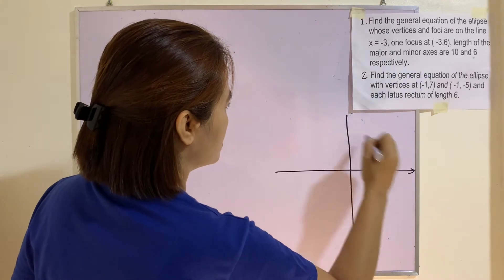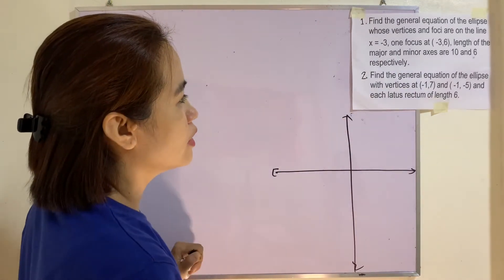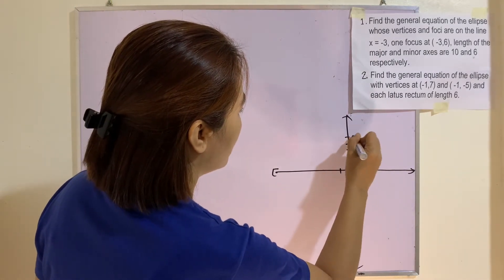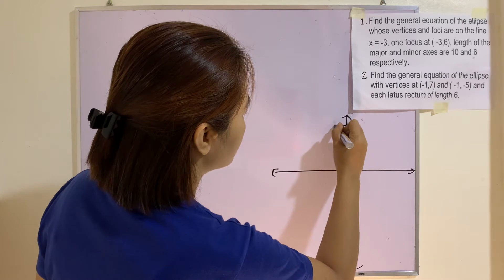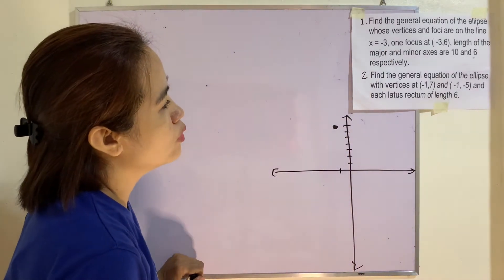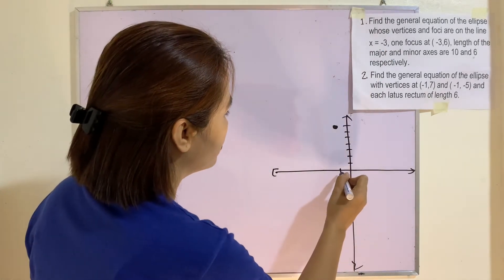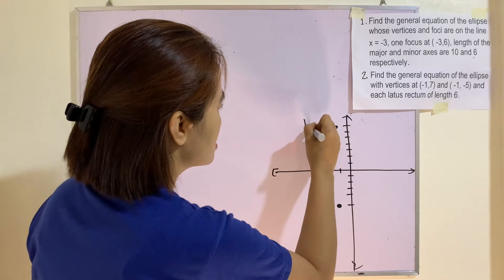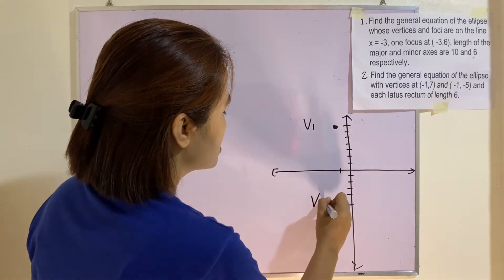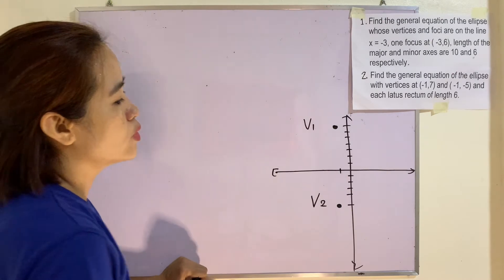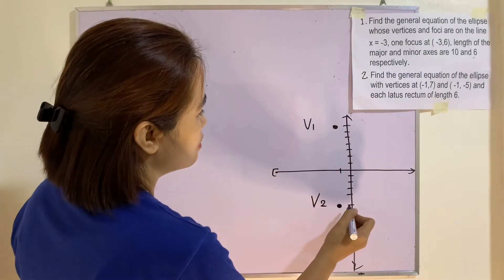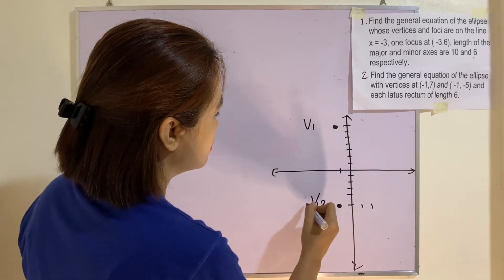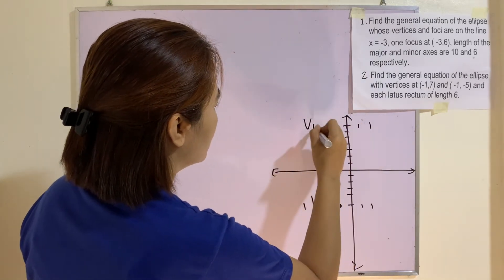Again, we need to illustrate the problem. We have vertex V₁ at (-1, 7) and vertex V₂ at (-1, -5). The latus rectum is 6, so extending 3 units on each side of each focus. The major axis is vertical, so we will again use the formula (y - k)² / a² + (x - h)² / b² = 1.